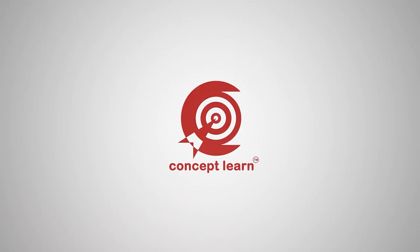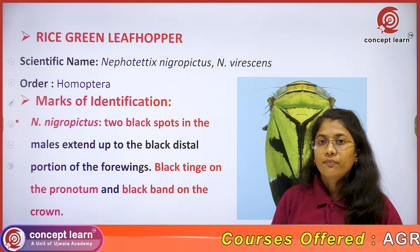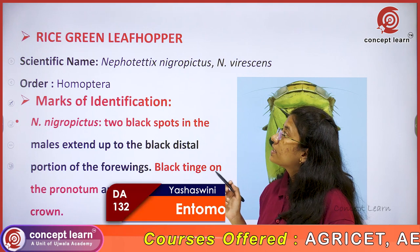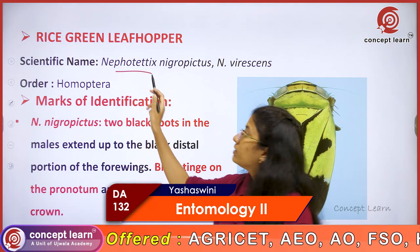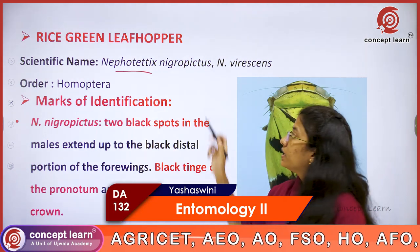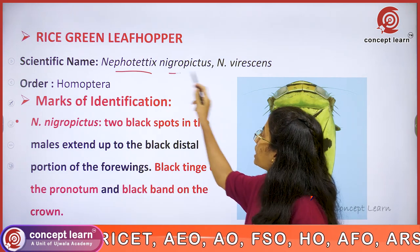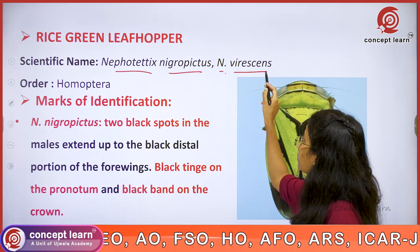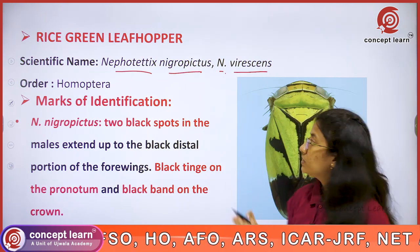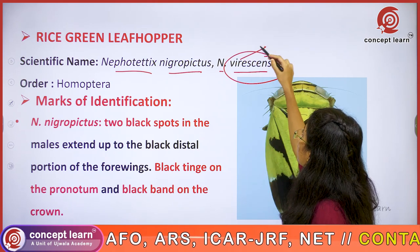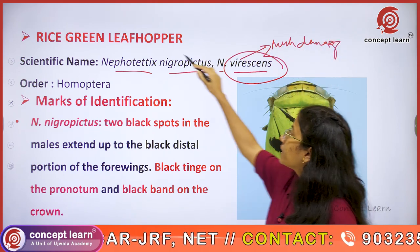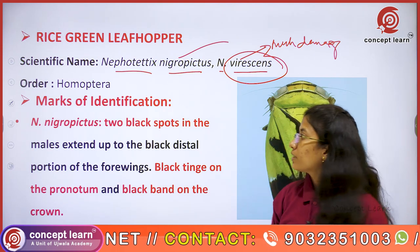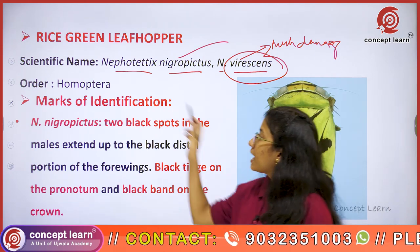Welcome to Concept Learn. Next, coming to another pest of rice - the rice green leafhopper. It has two species: Nephotettix nigropictus and Nephotettix virescens. Nephotettix virescens is found to cause much more damage when compared to Nephotettix nigropictus.